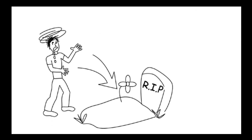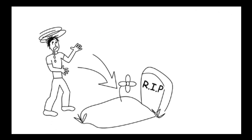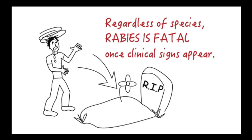Regardless of species, the disease is fatal once clinical signs appear. During the prodromal period, which can last up to three days, animals show only vague clinical signs. The disease progresses rapidly after the onset of paralysis, and death is virtually certain a few days thereafter. Some animals may die rapidly without obvious clinical signs.